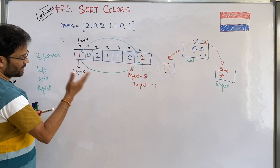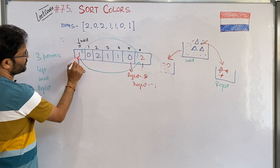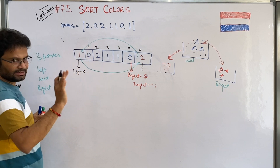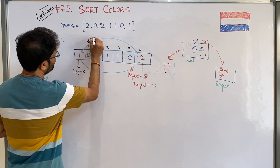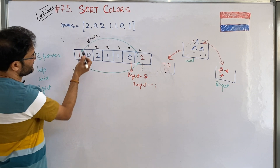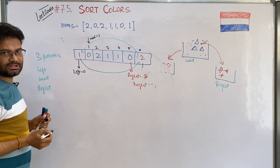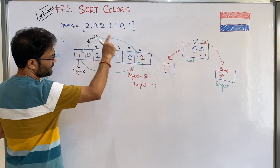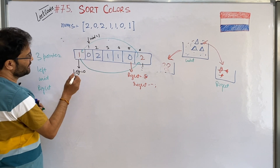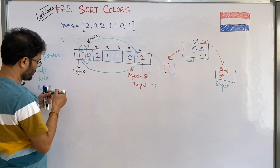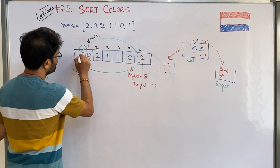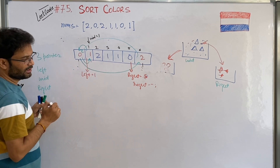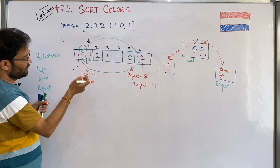Now again start from the current mid. This element is 1. If it is 1, no need to do anything — just move the mid pointer from 0 to 1. Now check what is at mid: it is 0. If it is 0, you have to throw it to the left side — swap between mid and left. This time we swap mid and left, so 0 comes here and 1 comes here. You have to move the left pointer by 1, and also increase the mid.